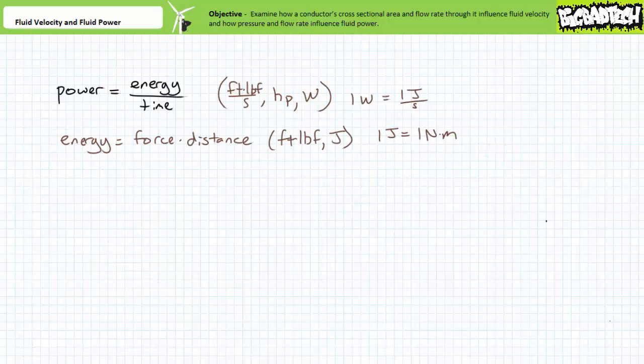Let's now examine how pressure and flow rate influence fluid power. Power is the time rate expenditure or production of energy — power equals energy over time. Customarily, power is expressed in foot-pounds force per second, horsepower, or watts, where one watt equals one joule per second. Energy is commonly expressed as force times distance, with common units being foot-pounds force and joules. Calculating output mechanical power requires knowledge of force exerted, distance traveled, and time required.